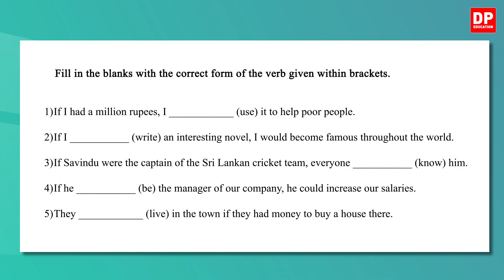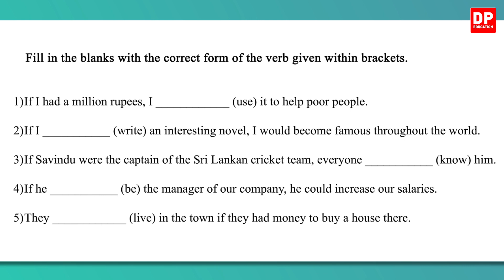Okay, let's see whether you could do it correctly. Look at the first sentence: If I had a million rupees, I blank use it to help poor people. So here the blank is in the result clause. In type 2 of the conditional sentences, the verb form of the result clause is 'would' plus the infinitive form of the verb. So the answer is: If I had a million rupees, I would use it to help poor people.